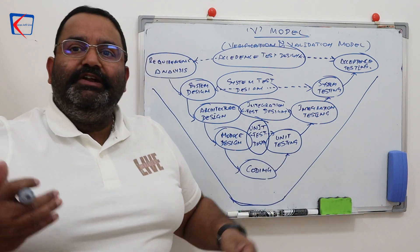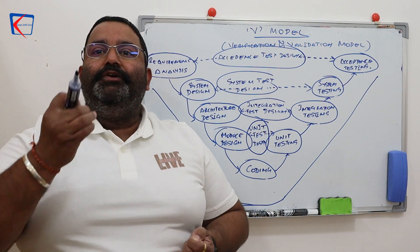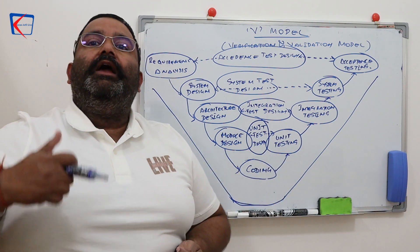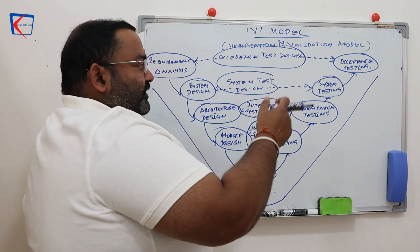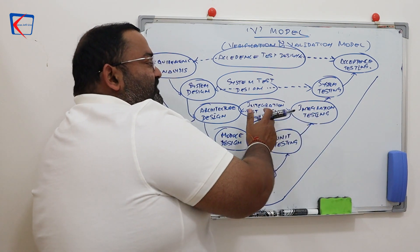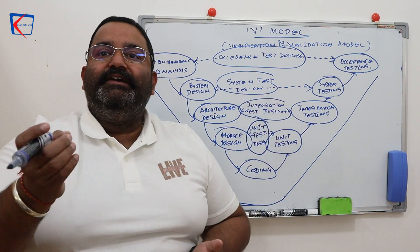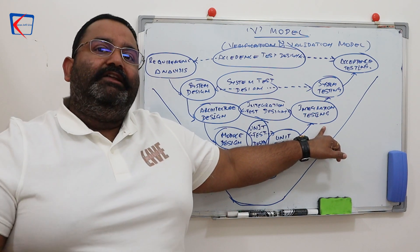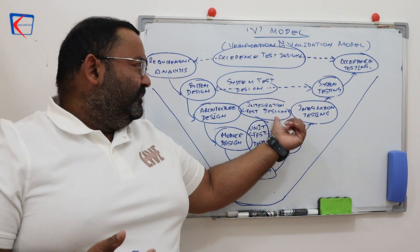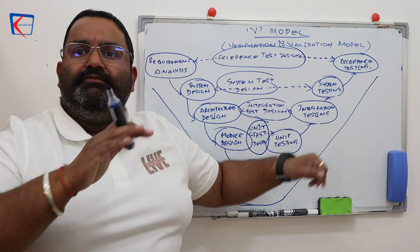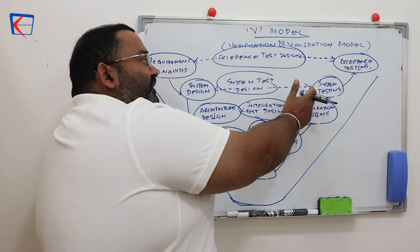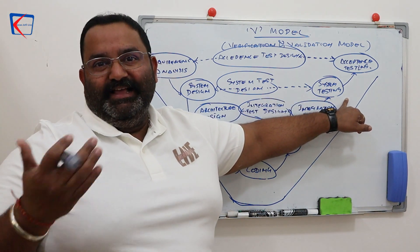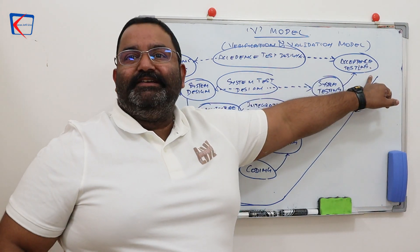When we design the test cases, we specify how we are going to verify them. When the actual testing starts — for example, unit testing — we follow those test cases to test and validate. After unit testing is validated, we move to integration testing, using the test cases designed during architecture design. If everything is correct according to the verification cases, we validate it and move to the next stage, and similarly for system testing.